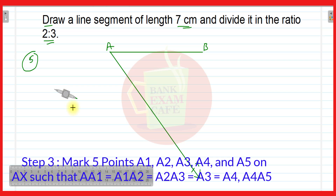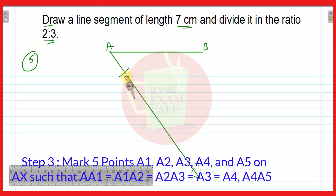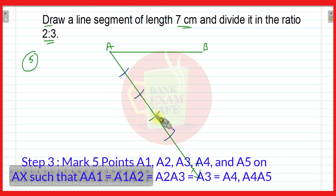For that, we take a compass and put the pointer at point A on ray AX, then draw an arc. Keeping the same distance, move the pointer to the point of intersection of the arc and ray AX, and draw another arc. Keeping the same distance, move it to this point and draw the next arc. Again move to the next point of intersection and draw an arc. Once again, move to the next point and draw the 5th arc.